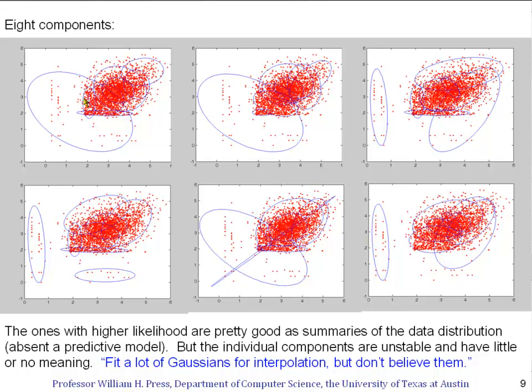The results here that have higher likelihood are pretty good as summaries of the data distribution, but not as individual components. If you take them and add them together in the proportions given by the Gaussian mixture model, that will be a distribution that if you sample from it, you'll get back some reasonable facsimile of what the actual data is. The moral of the story, and something that people who successfully use GMMs all agree with, is this little rule of thumb: fit a lot of Gaussians for interpolation to create a simple representation of your complicated data in multi-dimensions, but don't believe the individual components as signifying anything physical.